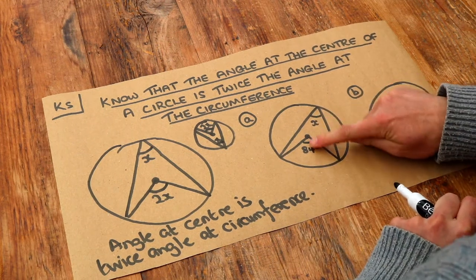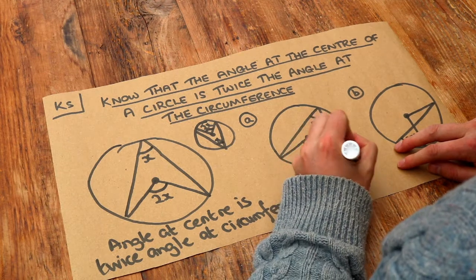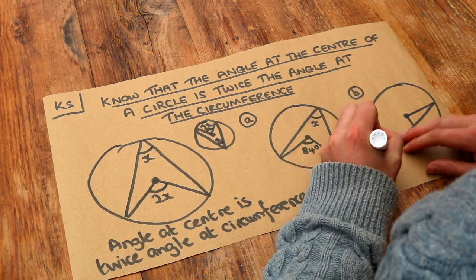Or another way of saying that, this angle is half of that one. So x is half of 84, which is 42 degrees.